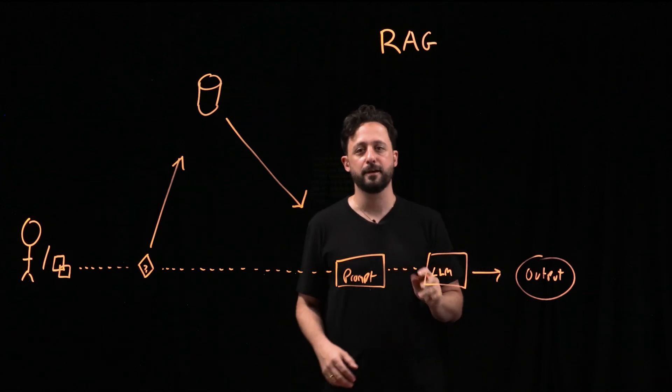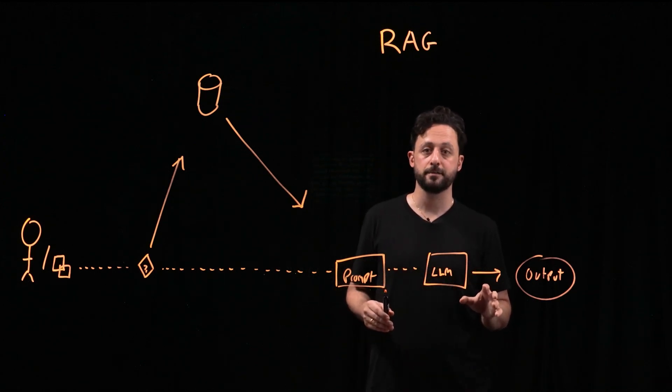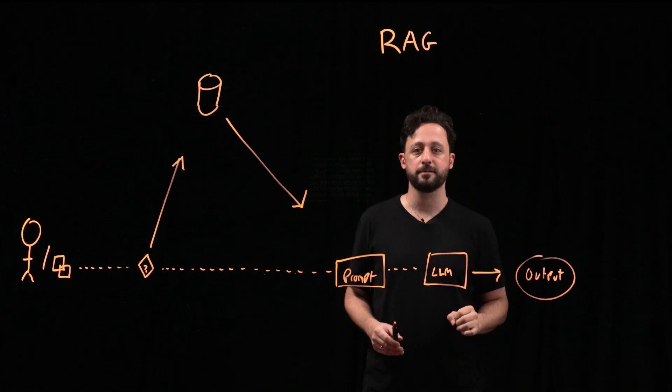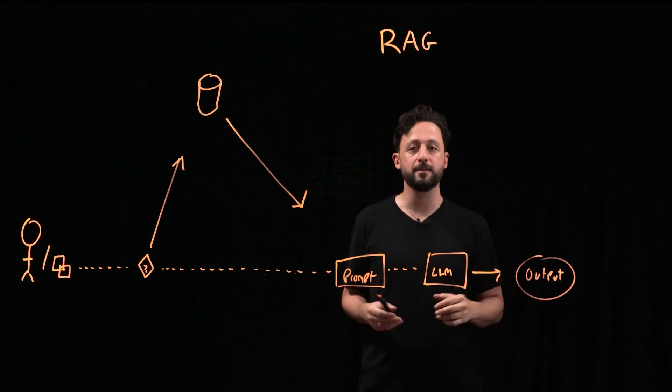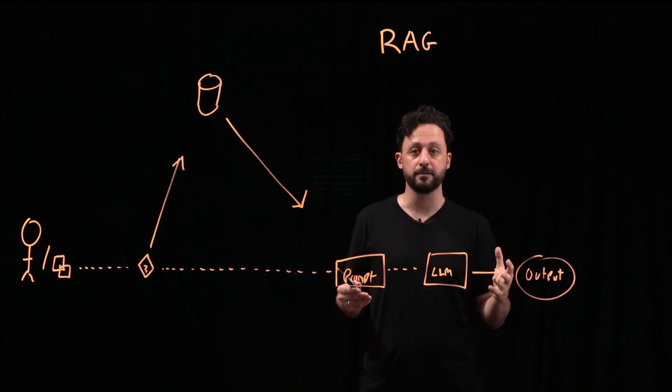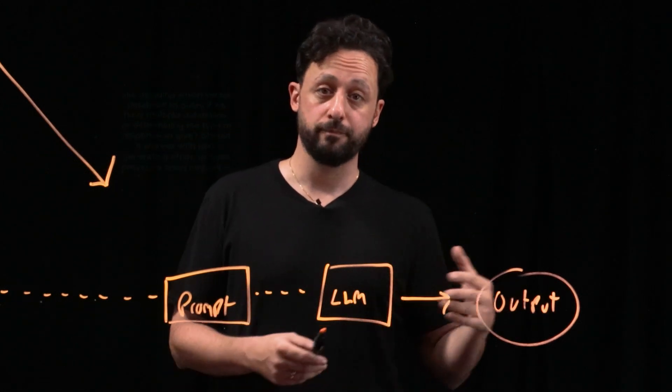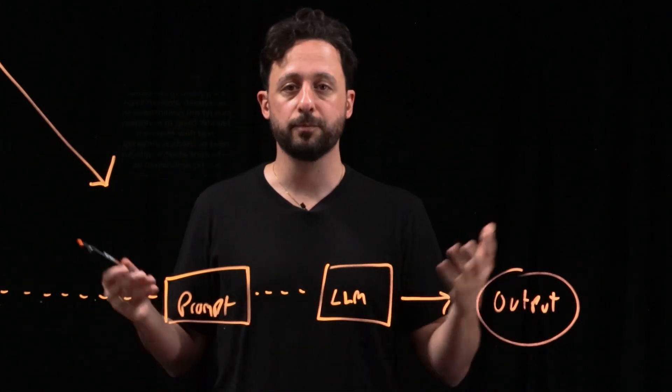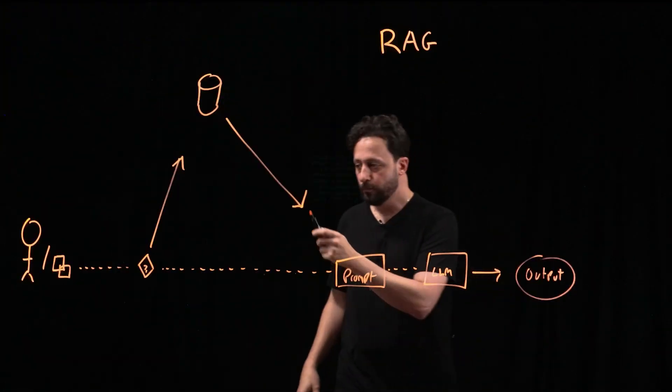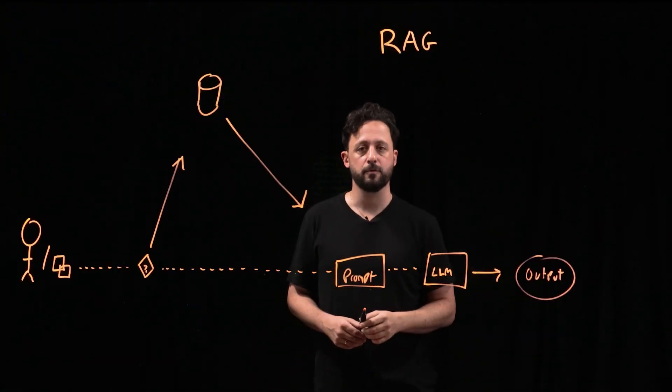But what if we could leverage the LLM not just for responses, but also for additional tasks, like deciding which vector database to query if we have multiple databases, or even determining the type of response to give? Should it answer with text, generate a chart, or even provide a code snippet? And that would all be dependent on the context of that query.